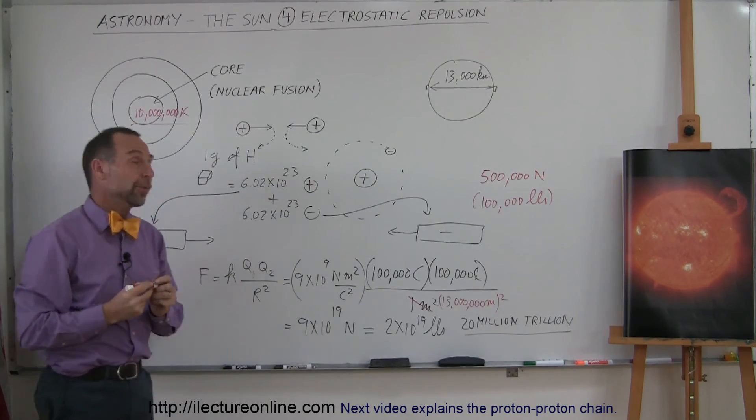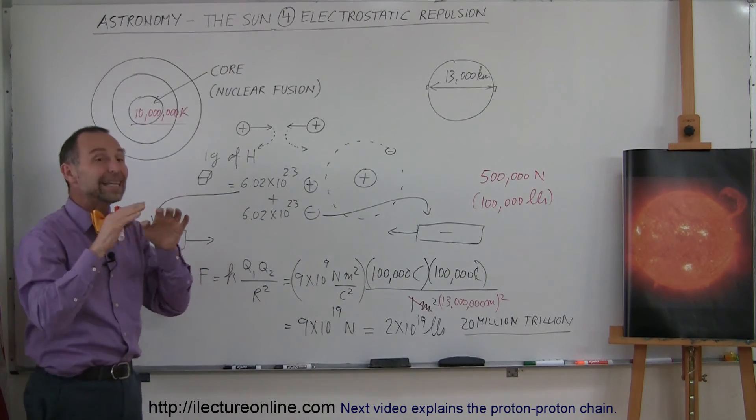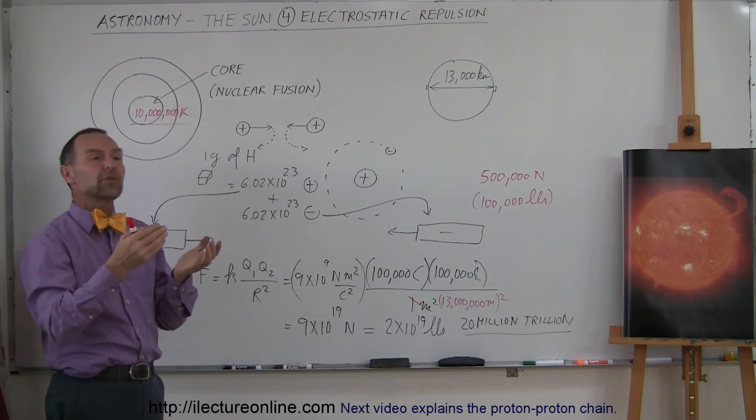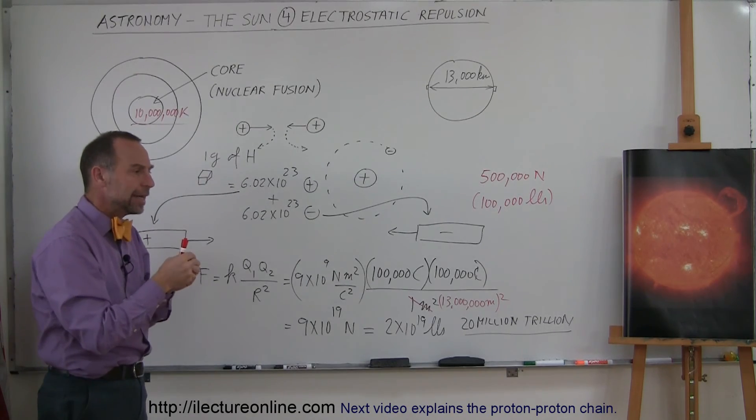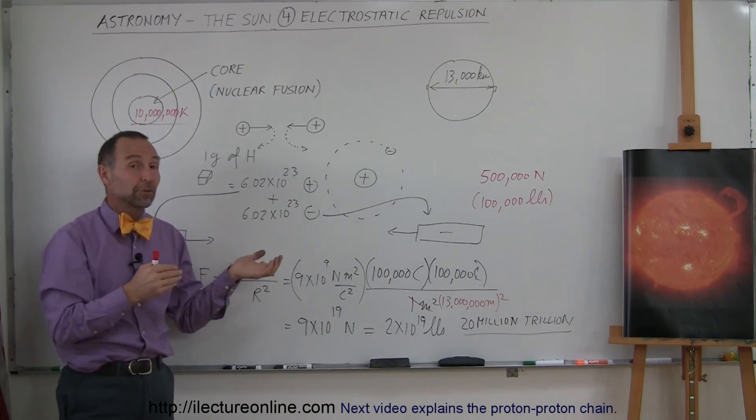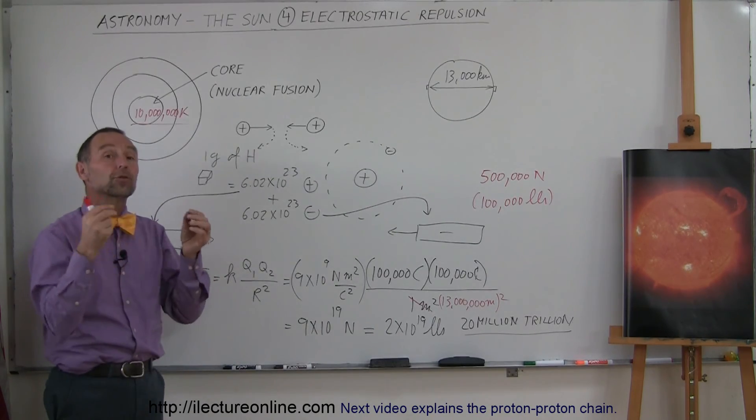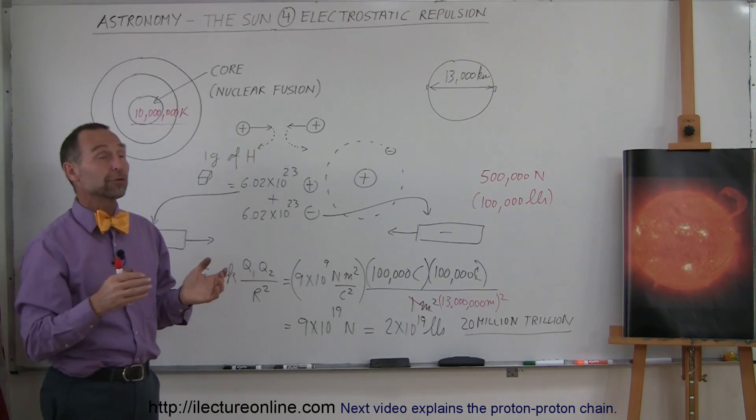And of course, in some ways that's kind of good, because otherwise stars that were kind of tiny in size would also become stars. Even planets like Jupiter could become stars if nuclear fusion could occur at much lower temperatures. If the repulsive forces of those protons and electrons weren't as great, then you would have nuclear fusion at much lower temperatures, and you would have a very different universe.